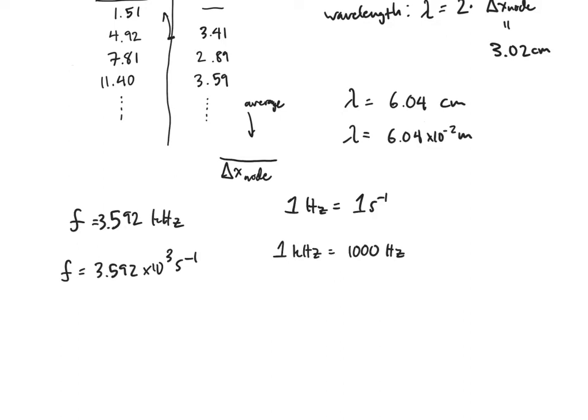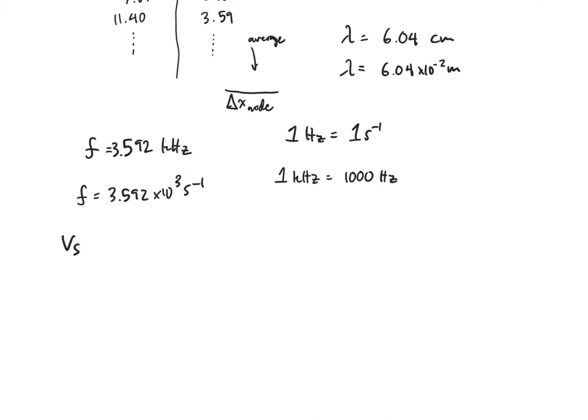Now we're going to use all these numbers to calculate the speed of the wave, or the velocity of the wave, which I'll just use the symbol Vs to represent. That's going to equal the wavelength times the frequency. Why is that?